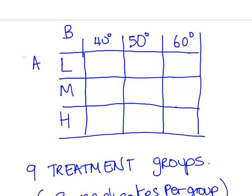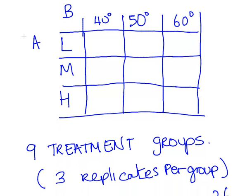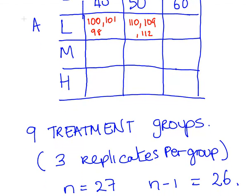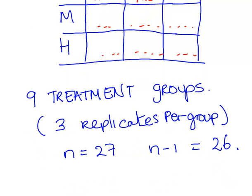Now suppose we have three replicate measurements per treatment group — for example, 100, 101, 98 in one cell, 110, 109, 112 in another, and so on. Altogether there would be 27 measurements (9 groups × 3 replicates), and therefore the total degrees of freedom would be N-1 = 26.